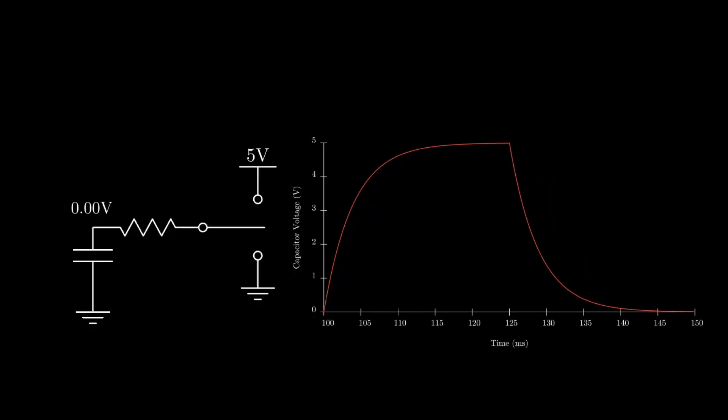If we do this repeatedly whenever the capacitor is almost fully charged or almost fully discharged, then we get a periodic signal that's starting to resemble a clock. Of course to generate our clock signal we don't want to have to manually flip a switch.